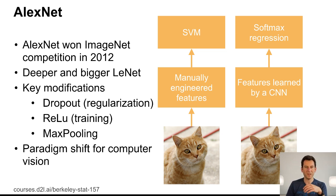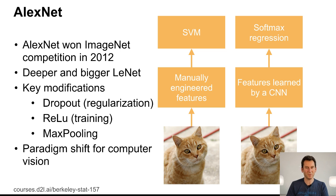The second key change was ReLU — rectified linear units. You replace the sigmoid nonlinearity with just the max between x and 0, which had the consequence that the gradient would no longer vanish, because you have at least one half-space where the function is the identity. The third thing was max pooling, which replaced average pooling. As a result, features became more shift-invariant because you could move your attributes a little bit and max pooling would still pull the relevant attributes through. This led to a paradigm shift in computer vision, and afterwards people went to speech recognition, natural language processing, text generation, and many other things where deep networks proved their mettle.